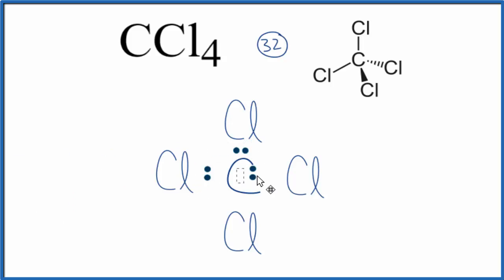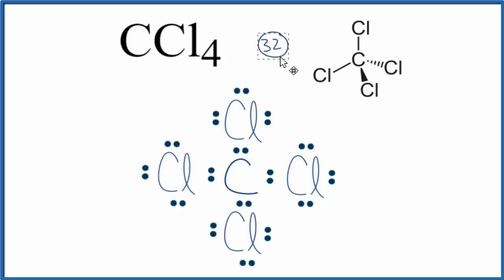Then we'll go around the outside and complete the octets on the chlorine atoms until we've used thirty-two valence electrons. So we've used all thirty-two valence electrons.